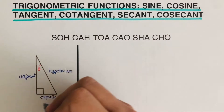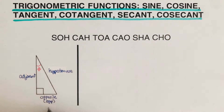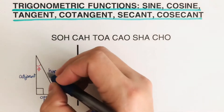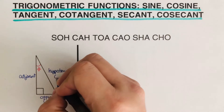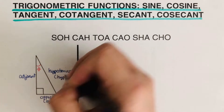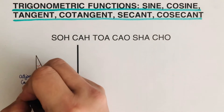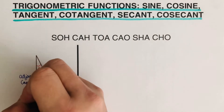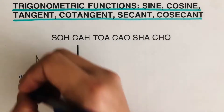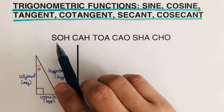I can go ahead and rewrite this — that's how we write the opposite. The hypotenuse can be shortened this way, so that represents the hypotenuse. And adjacent can be shortened this way, and that represents the adjacent.